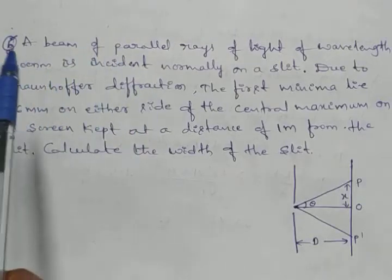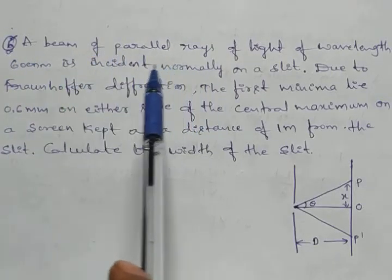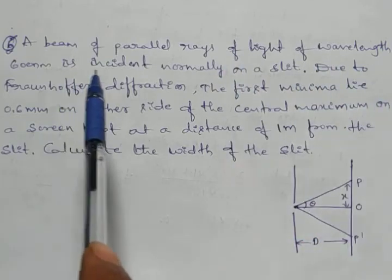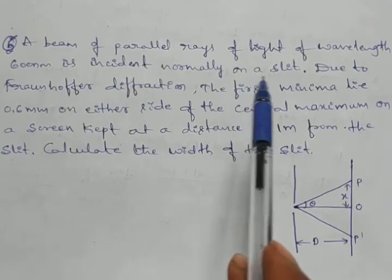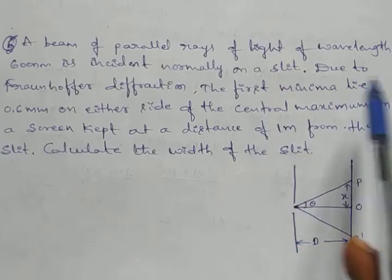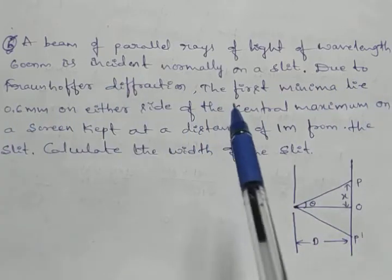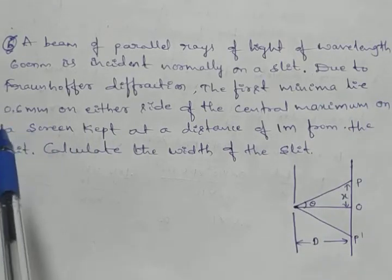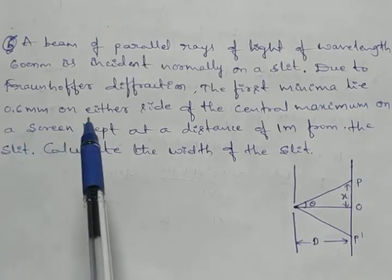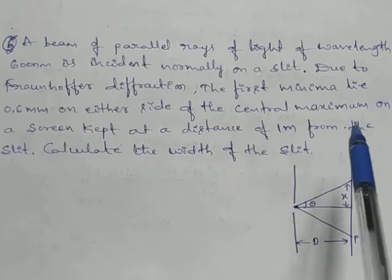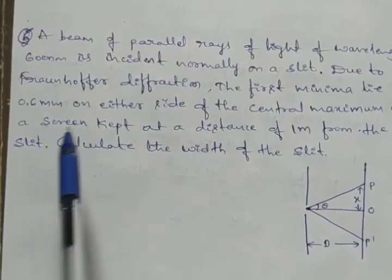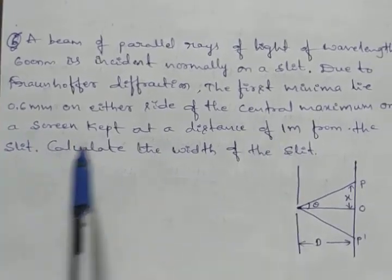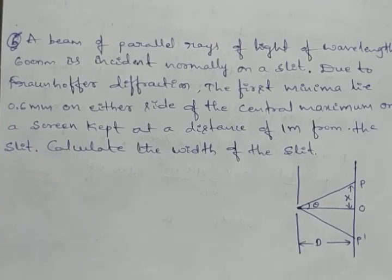A numerical question from wave optics: a beam of parallel rays of light of wavelength 600 nanometers is incident normally on a slit. Due to diffraction, the first minima lie 0.6 millimeters on either side of the central maximum on a screen kept at a distance of 1 meter from the slit. Calculate the width of the slit.